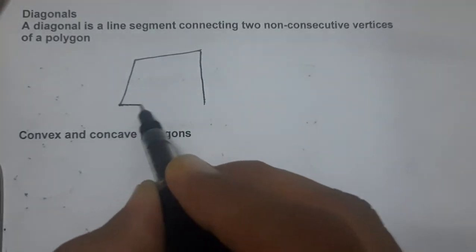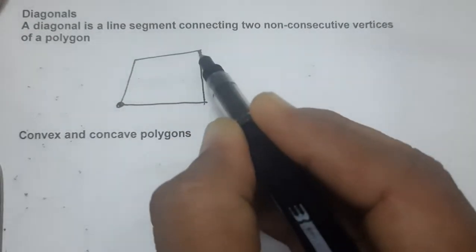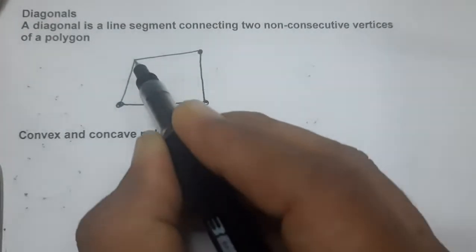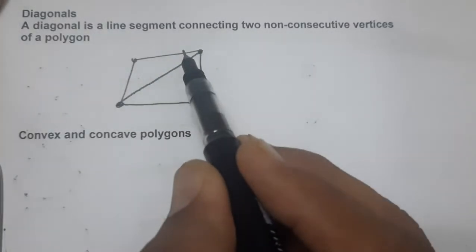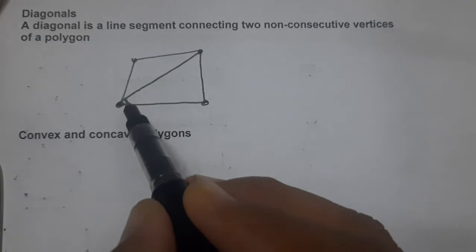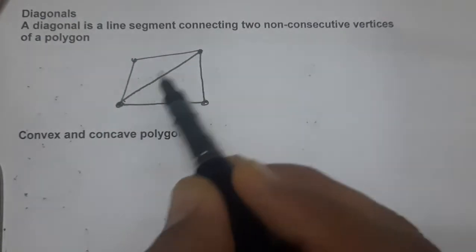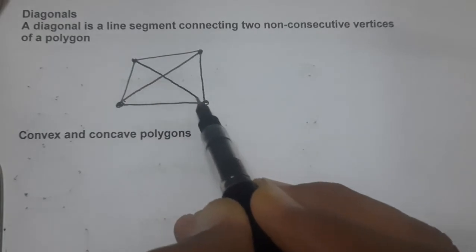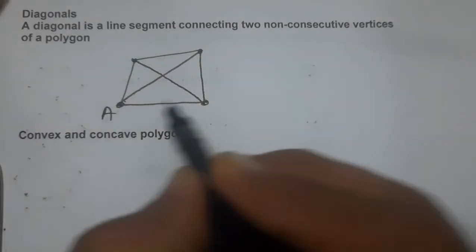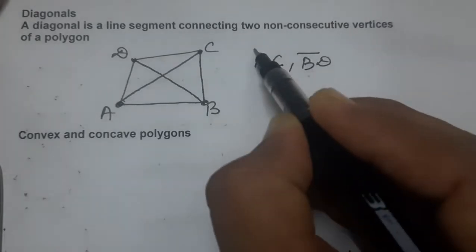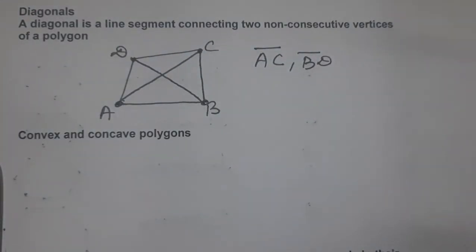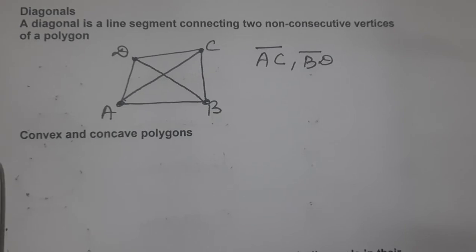Let us take any quadrilateral ABCD with four vertices. Joining two non-consecutive vertices gives us a diagonal. There are two diagonals in this quadrilateral: AC is the first one and BD is the second one.